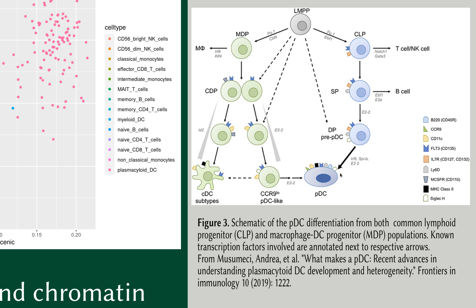These results actually correspond quite nicely with some of the literature data on the differentiation of plasmacytoid dendritic cells. Interestingly, these cells can arise independently from either a macrophage and dendritic cell progenitor in the myeloid lineage, or from a common lymphoid progenitor.